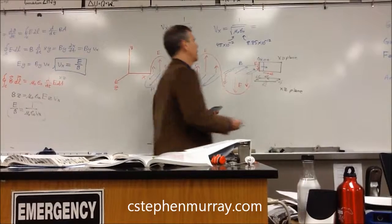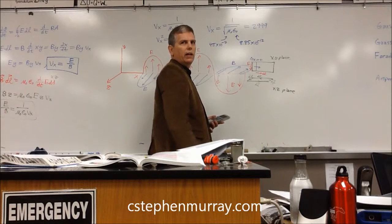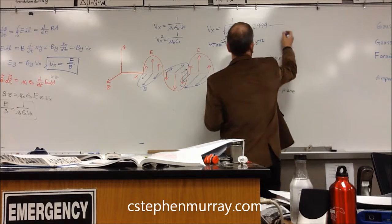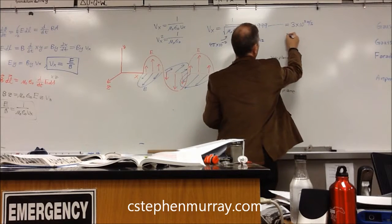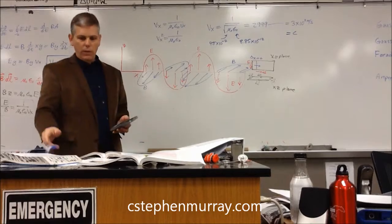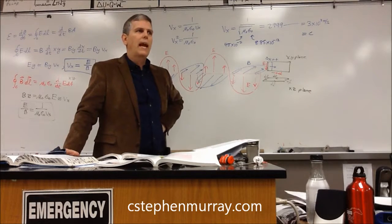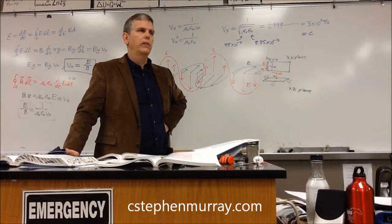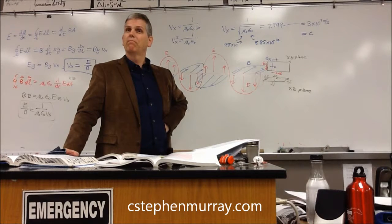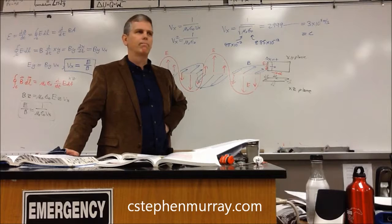You get a big number, which rounds to three times ten to the eighth meters per second — which is, of course, the speed of light. When Maxwell did this, he realized that the electromagnetic waves created by an antenna would self-propagate outwards at the speed of light. Later, this was actually demonstrated by a gentleman named Hertz, who was able to make radio waves using alternating current in an antenna, which propagated outwards at the speed of light and proved that those waves were actually light waves.